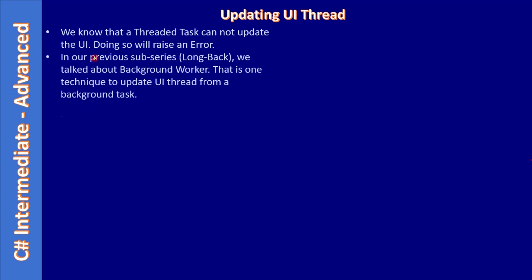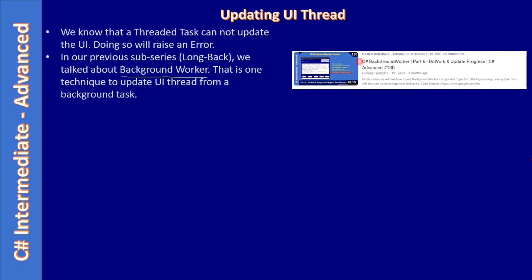In our previous sub-series, we talked about the BackgroundWorker component, which is one technique to update the UI thread from a background task. If you want to refer to it, you can go to video 130. If you want the complete BackgroundWorker component coverage, you can watch that six-part sub-series.